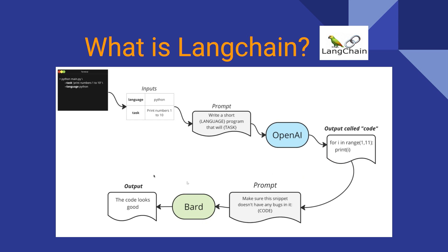The AI model, for example using Google or Word, can also be used to make sure a code snippet doesn't have any bugs in the code.